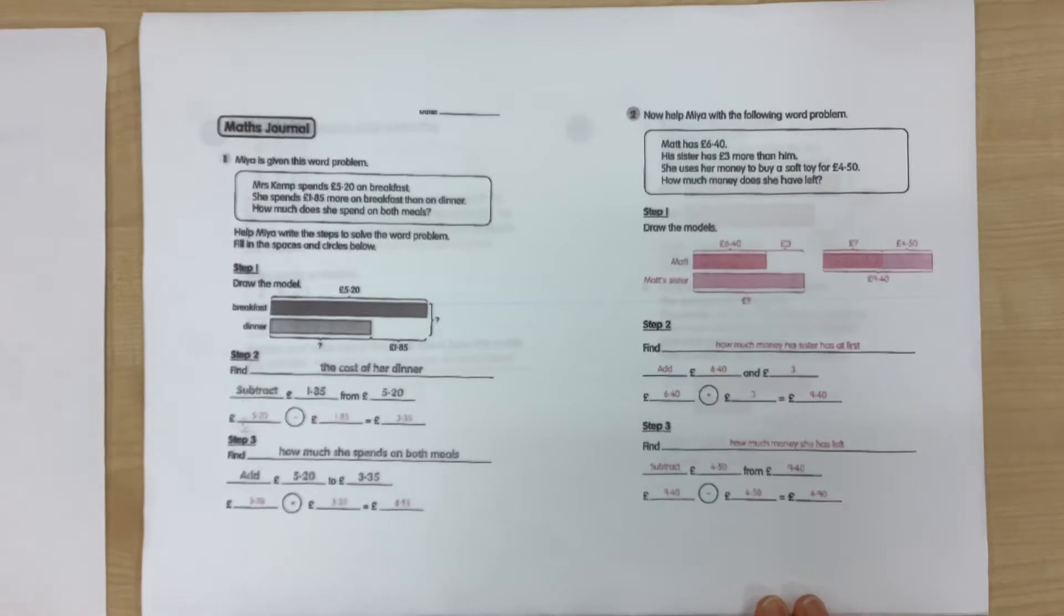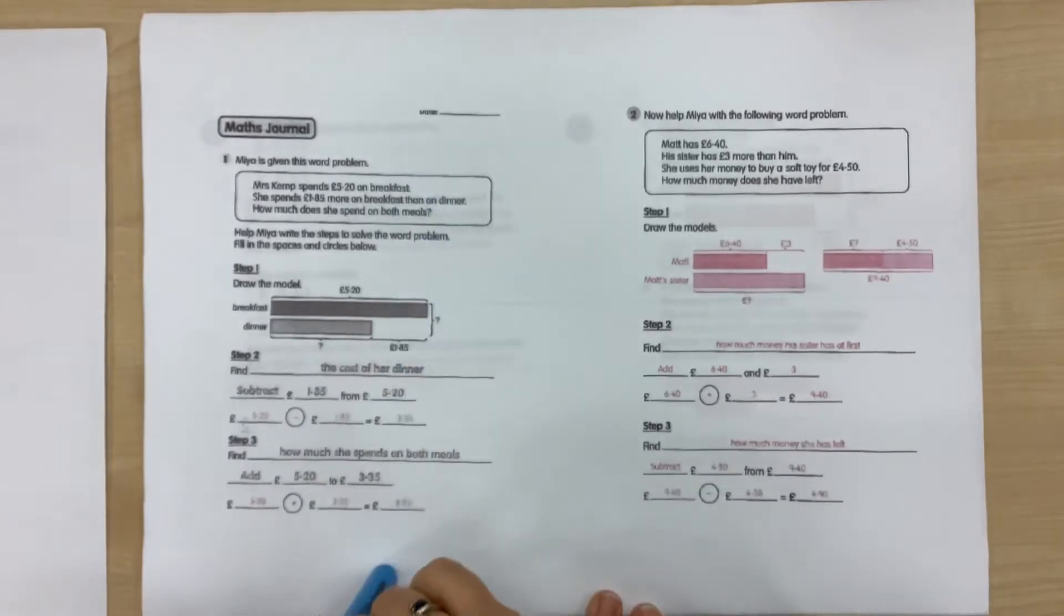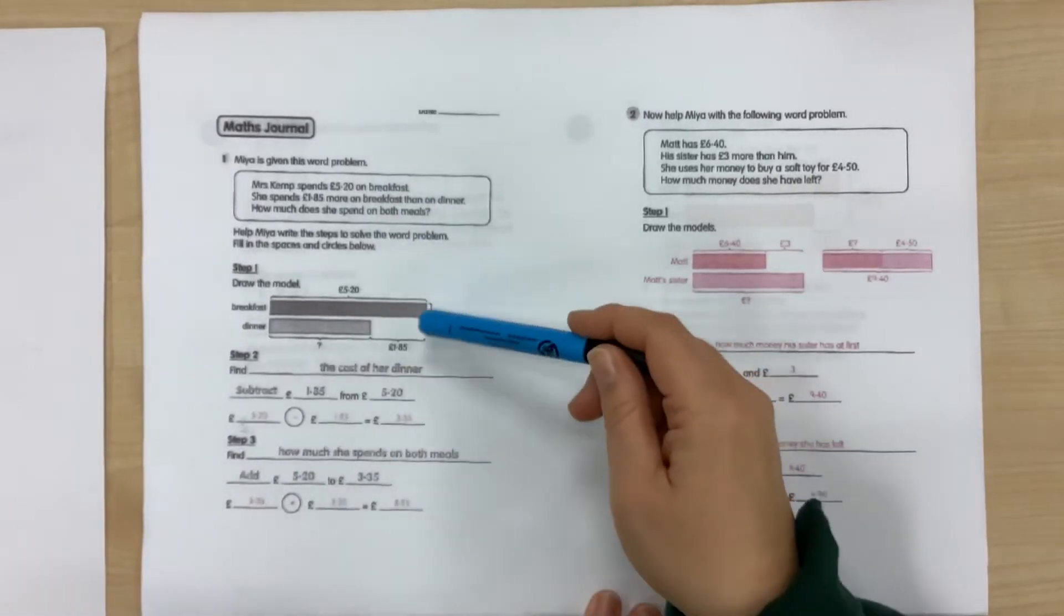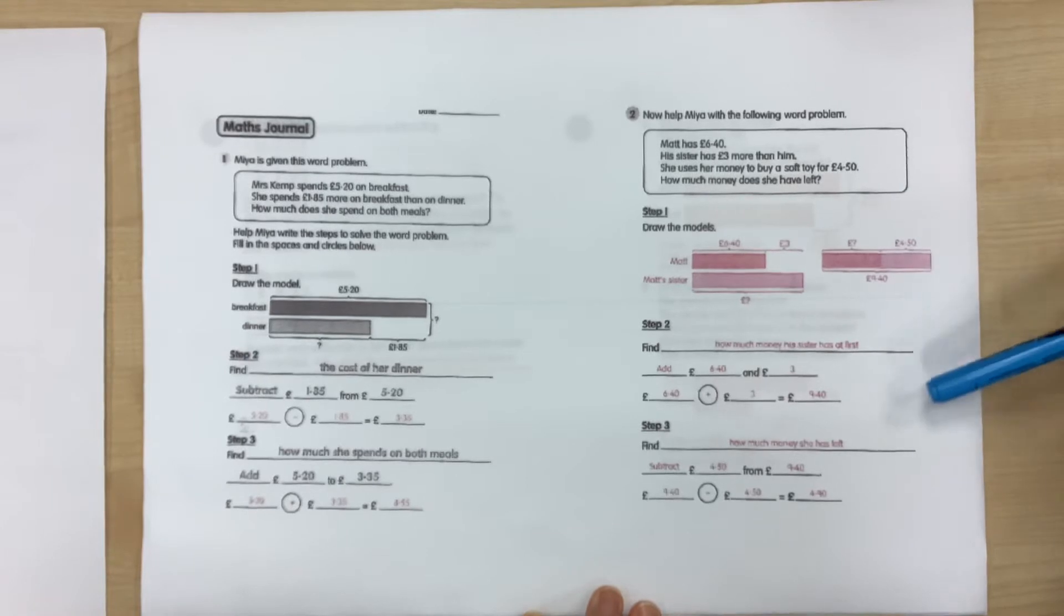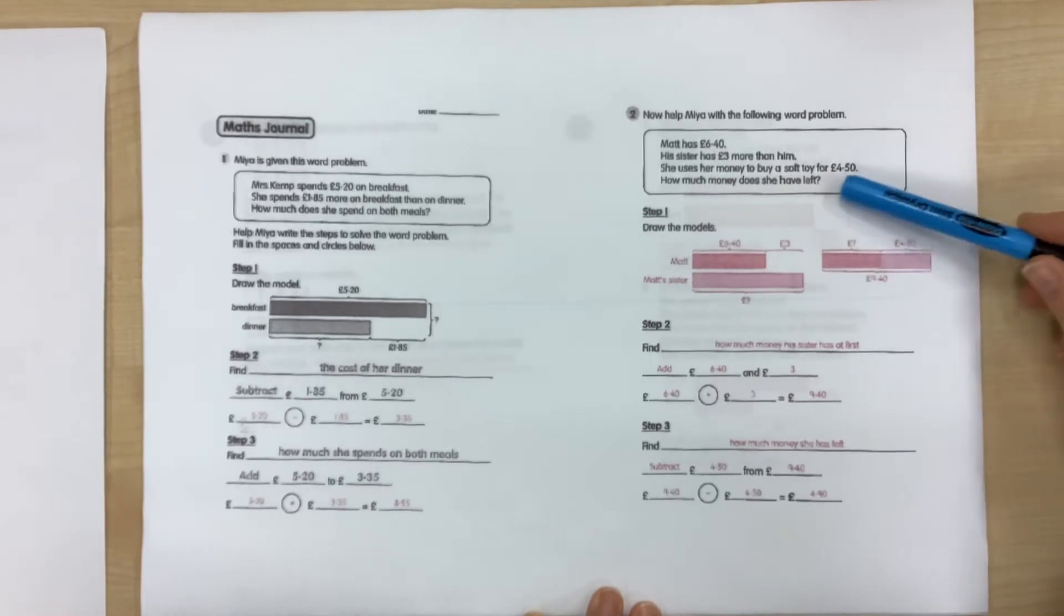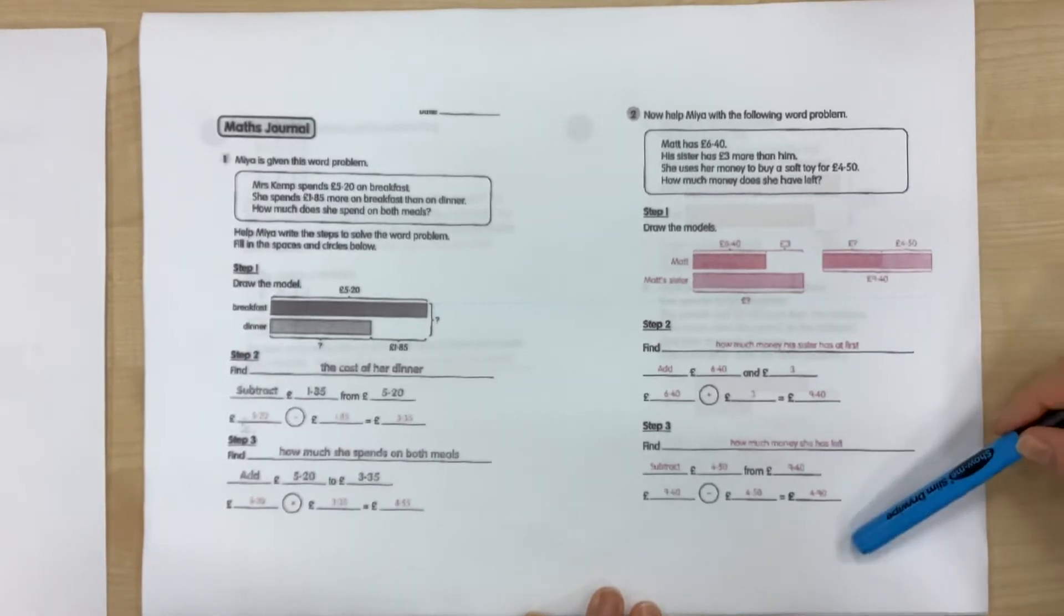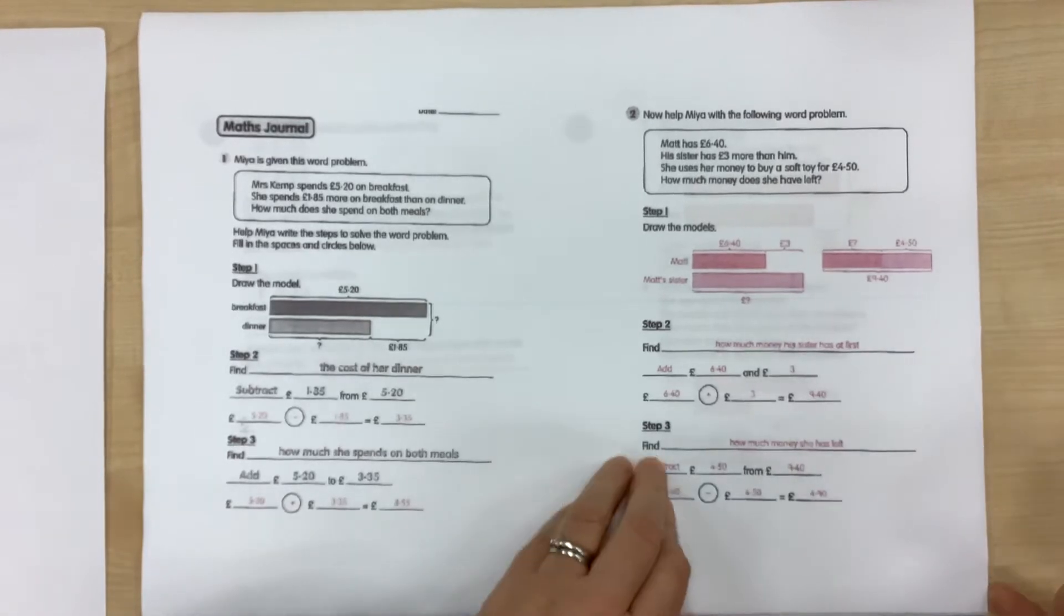So let's have a look at some of the other word problems in the book. If you pause the video as we go through, then you can check your answers. The math journal this time was, you were given an example of a word problem and you had to write the steps to work out the answer. Really like the rules for working out the word problem. So hopefully you managed that one okay.